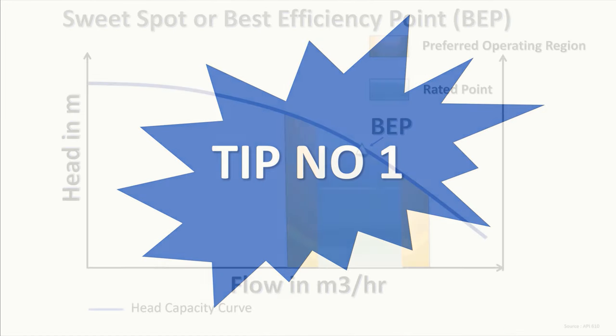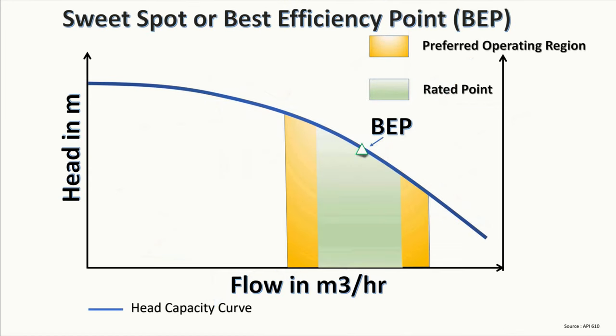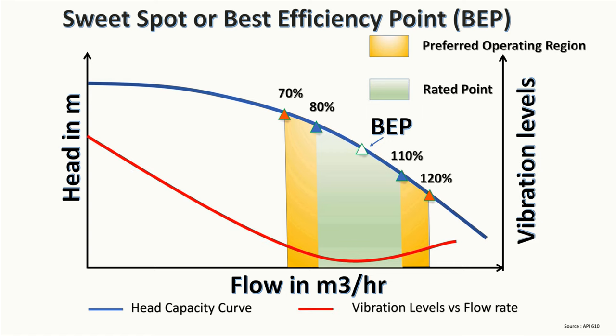Tip number one: try to operate the pump around its sweet spot. There is a reason why API 610 — a widely recognized standard for pumps in oil and gas service — recommends the operating point to be within 80 to 110% of the BEP as the preferred operating range, and within 70 to 120% as the allowable range. The nearer the operating point to BEP, the better the performance and the fewer the cavitation issues.